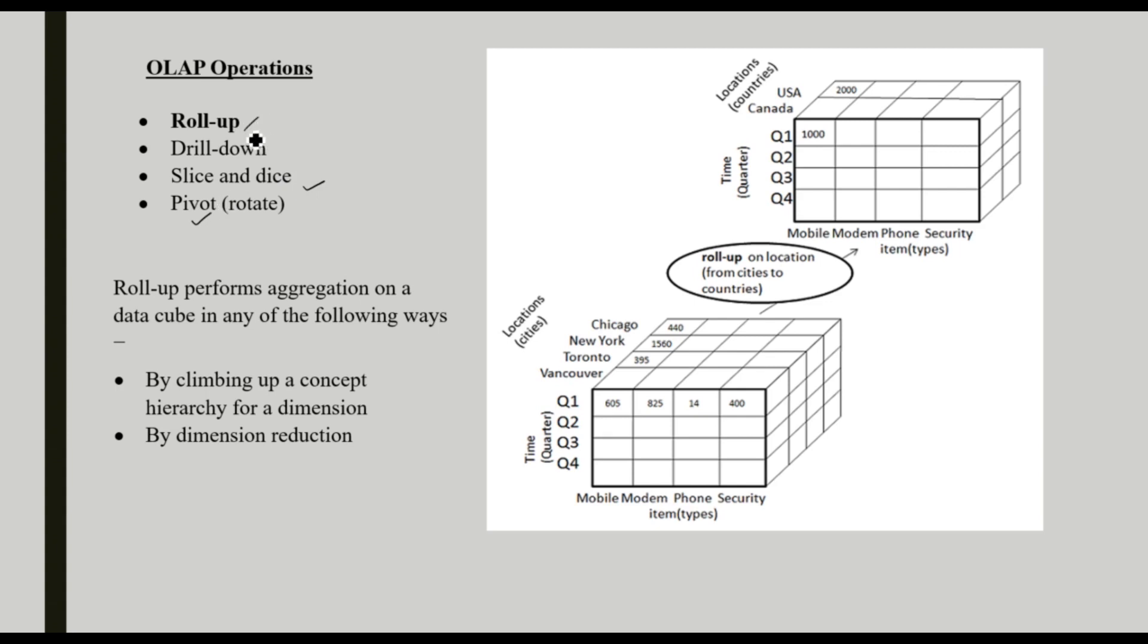First, we are moving to roll-up. Roll-up performs aggregation on a data cube in any of the following ways. We are summarizing some details and making it more aggregated. That is by climbing up a concept hierarchy for the dimension, or sometimes by dimension reduction we can perform the roll-up operation.